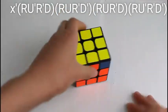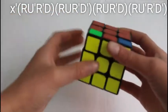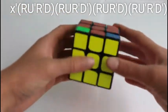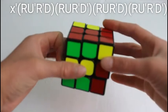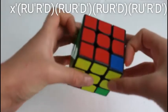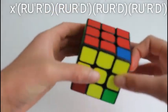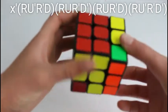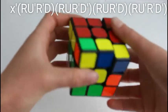Then we'll do the first part of the algorithm: R U prime R prime D, R U R prime D prime. Then we'd carry on by doing R U R prime D, R U prime R prime D prime.